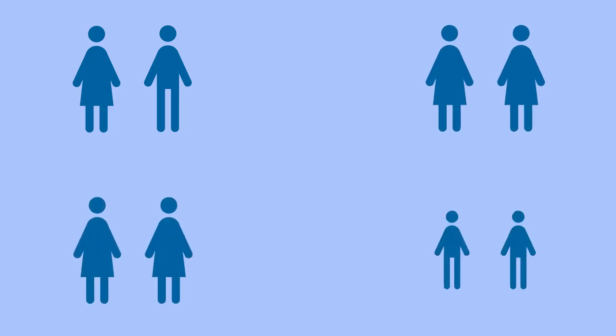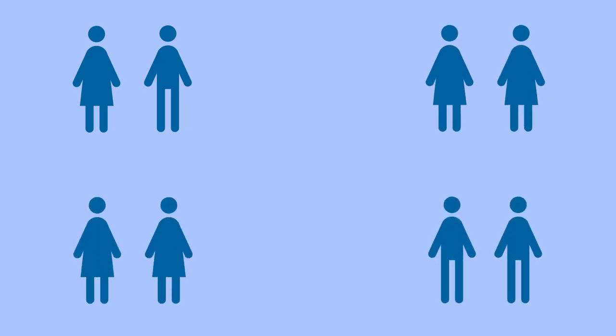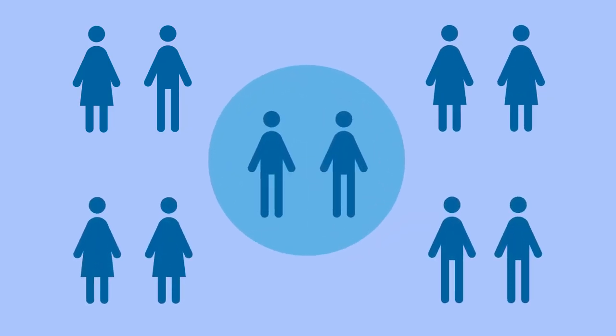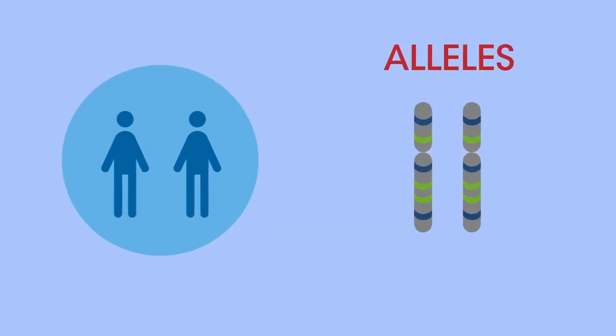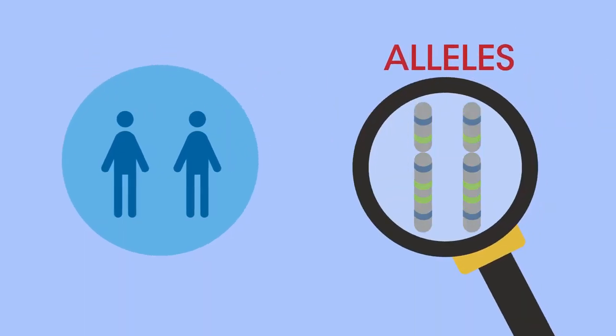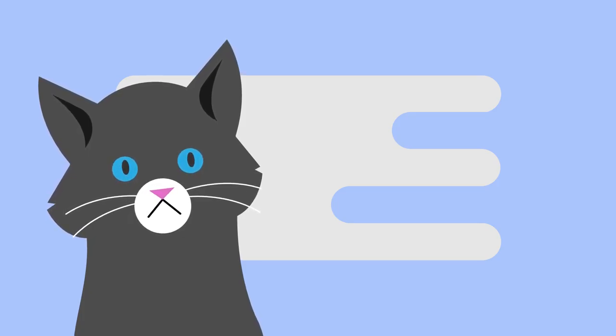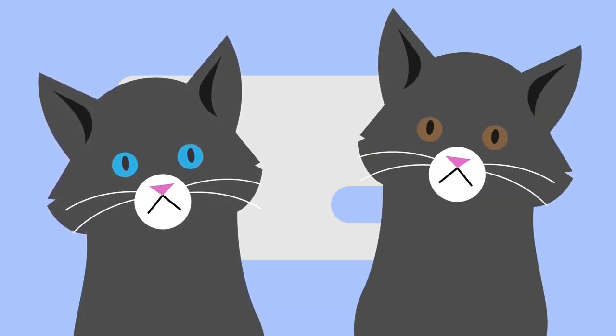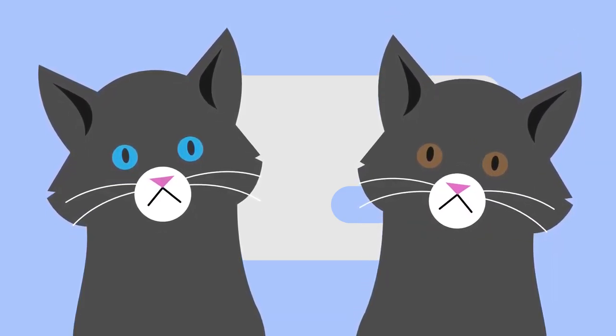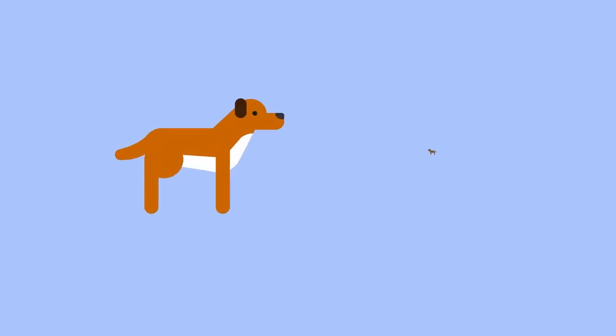Different members of a population have different DNA, unless they are identical twins. This means they have different versions of genes called alleles, and these alleles give rise to different characteristics. For example, on the eye color gene, this kitten has an allele for blue eye color, whereas this kitten has an allele for brown eye color.